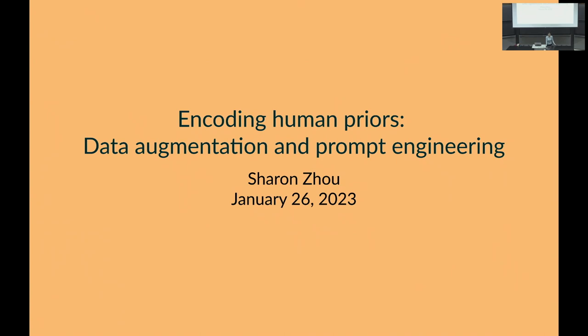Interestingly, research at one point looked down on data augmentation because it wasn't doing things from scratch — it was encoding human knowledge, and the idea was the model should just figure it out. But arguably, datasets are already biased toward things that were easy to collect or easy to scrape off the internet, so data augmentation is a way to adjust and correct for the task you actually want to do.